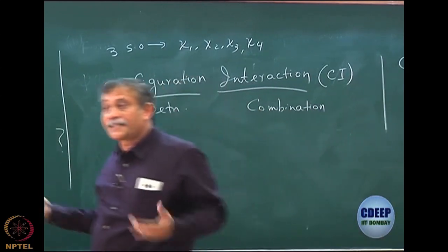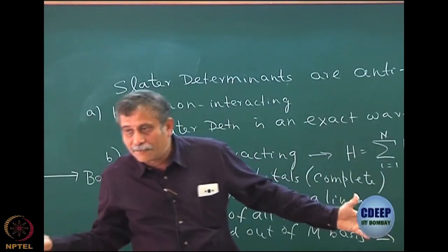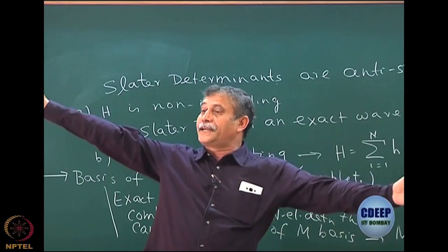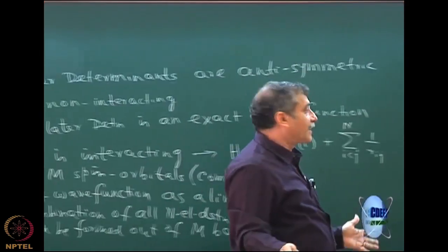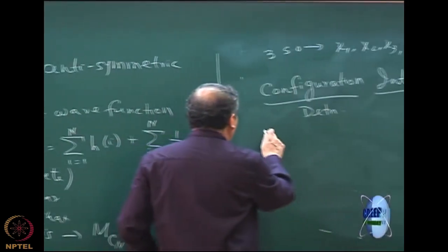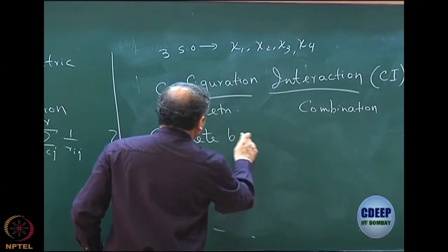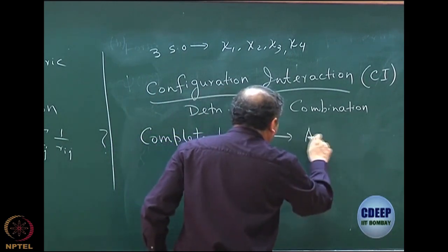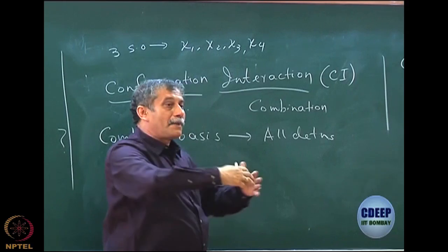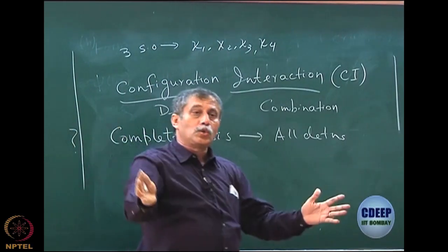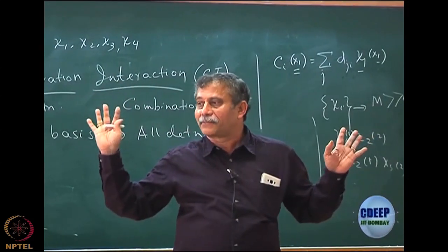The basis is not complete, of course — that is correct. This was an example, but if I take those three or four orbitals to be a complete set, then potentially this is exact. So, if I have a complete basis and within that complete basis I take all determinants, but I may choose not to take all determinants — I may remove some.